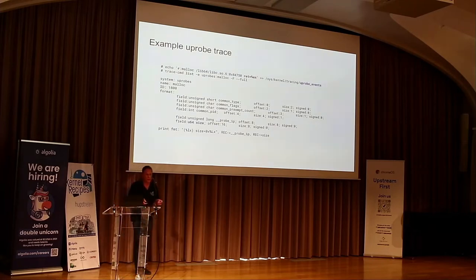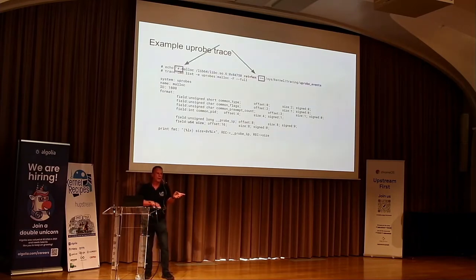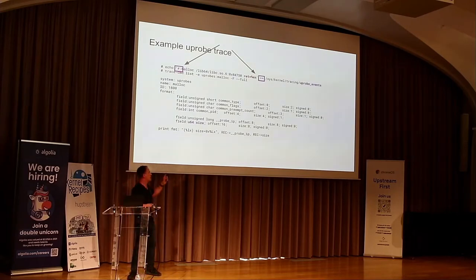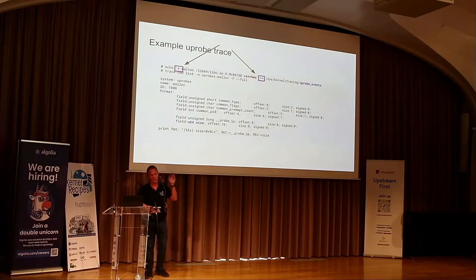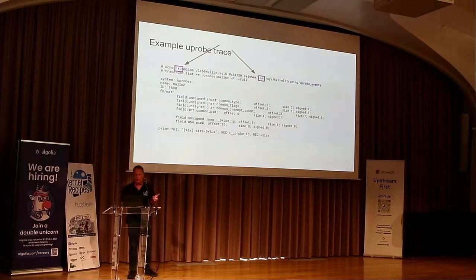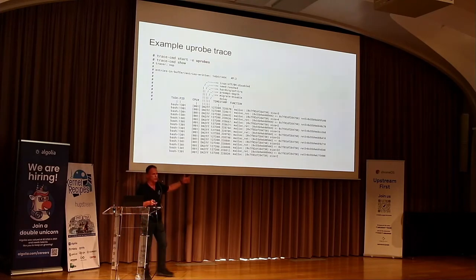Another option you can do — and kprobes has the same thing — is if you change that first 'p' to an 'r', it's the return value. I concatenated it rather than using a single >, because that truncates. I wanted both values — start and end — so I concatenated to add to it. I know rax is the return value register. And not only did I get to see the sizes, I also see the return values of all the mallocs that happen. These are just user space addresses. These are just examples.